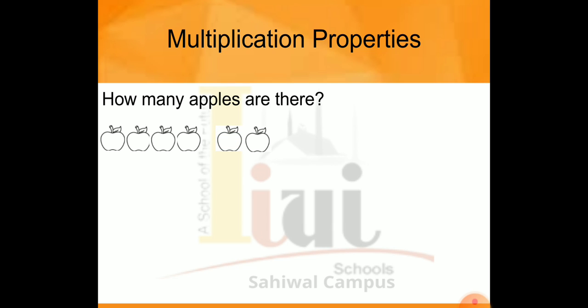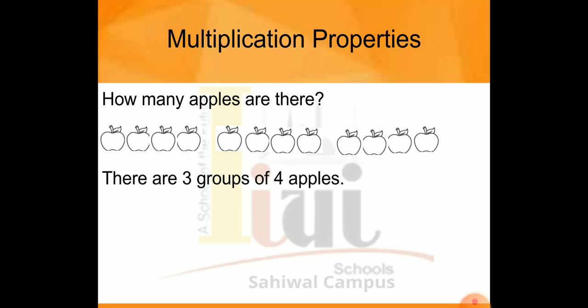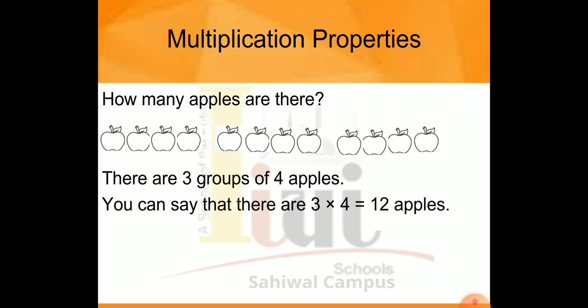The second group has 1, 2, 3, and 4 — so the second group also has 4 apples. The third group is 1, 2, 3, and 4. We have just 3 groups of apples, each with 4 apples. So we multiply: 3 groups, 4 apples each. We multiply and get 12. So the total number of apples is 12.